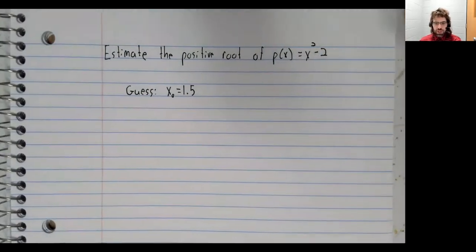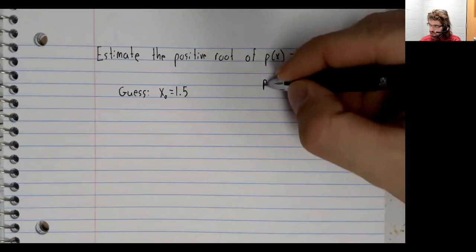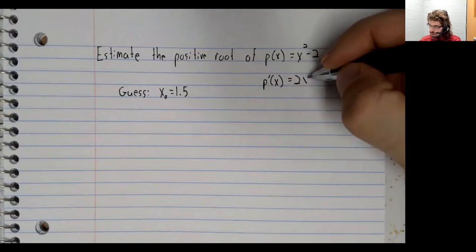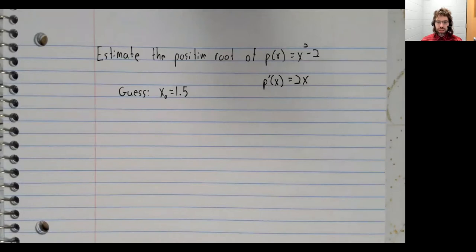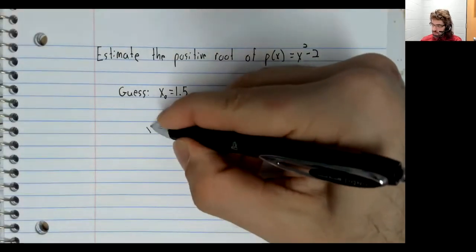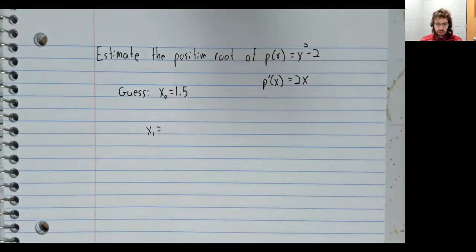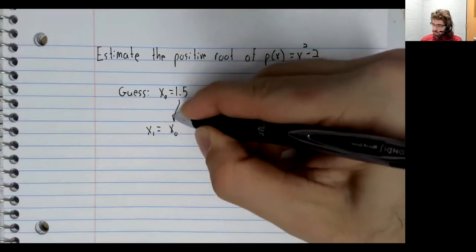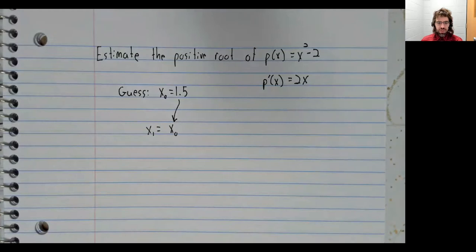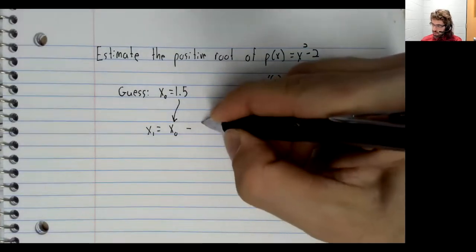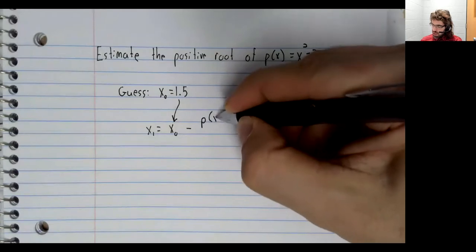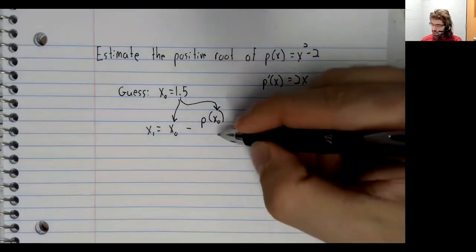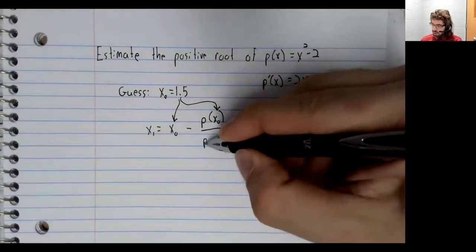To use Newton's method, we need p(x), which was given to us. We are going to need the derivative as well. Our next value is going to be our initial guess of 1.5 minus p(1.5) divided by p'(1.5).